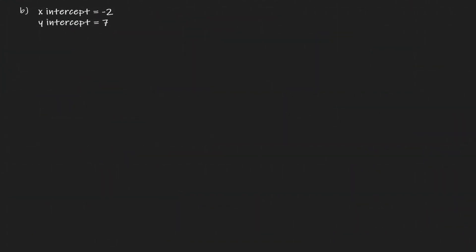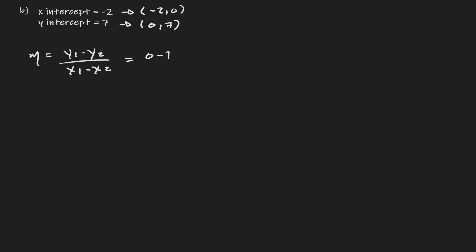Let's take a look at an additional problem. Here we are given the value of both intercepts: the x-intercept at negative two and the y-intercept at seven. The x-intercept is a coordinate point, so if the x-intercept is negative two, we have a coordinate point at negative two comma zero. If the y-intercept is seven, we have a coordinate point at zero comma seven. Both forms need the slope, so let's find it: zero minus seven divided by negative two minus zero gives us negative seven over negative two, which is seven over two.